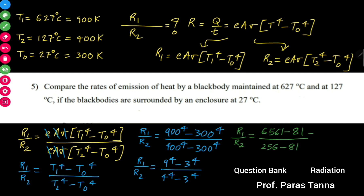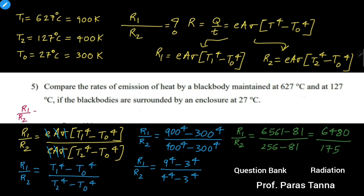So students, evaluating this, we get 6480 divided by 175, which equals 37.0286. Rounding off, we get 37.03. So the required ratio of rates of emission of the given black body is R1 to R2 = 37.03 : 1.